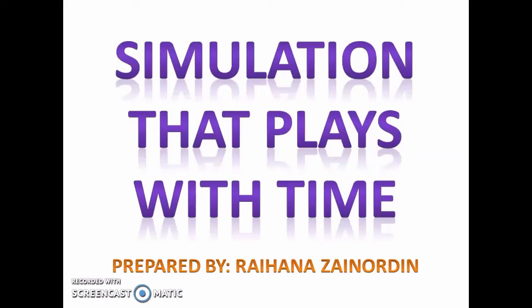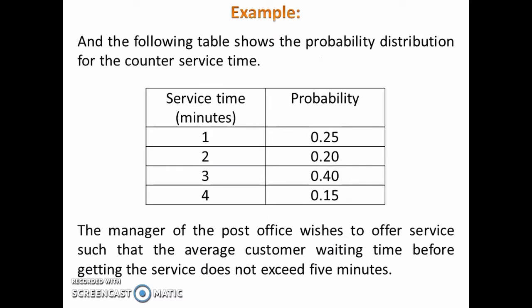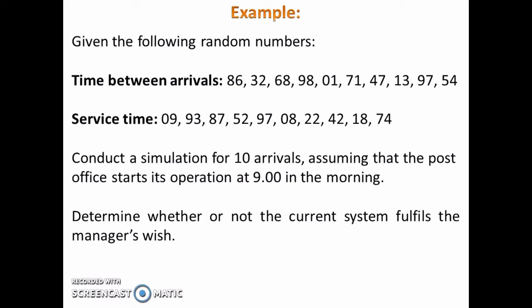Simulation that plays with time. Example: a small post office currently has one service counter. The following table shows the probability distribution for the time between customers' arrivals, and the following table shows the probability distribution for the counter service time. The manager wishes to offer service such that the average customer waiting time before getting service does not exceed 5 minutes. Given the following random numbers, conduct a simulation for 10 arrivals assuming that the post office starts its operation at 9 in the morning.